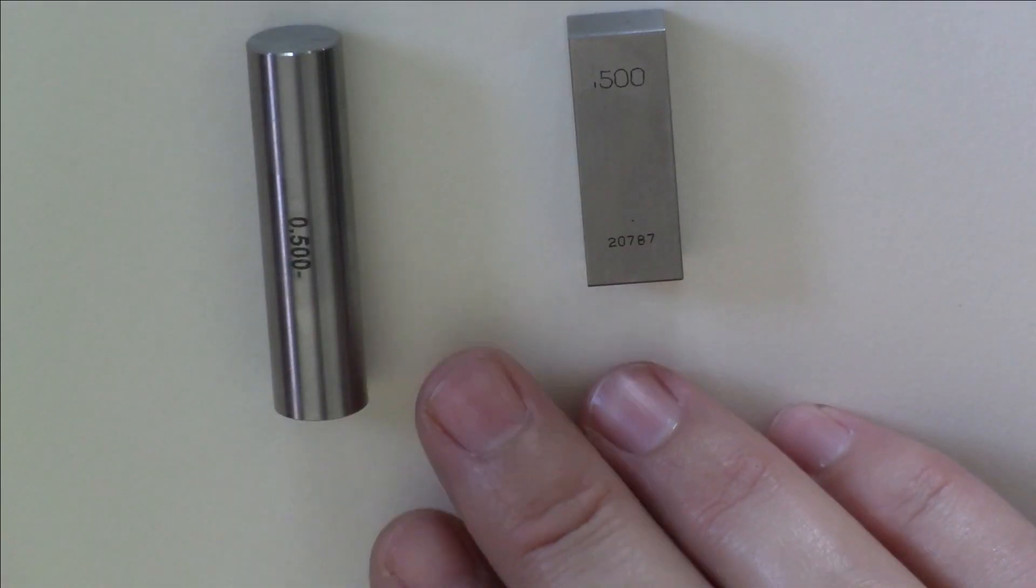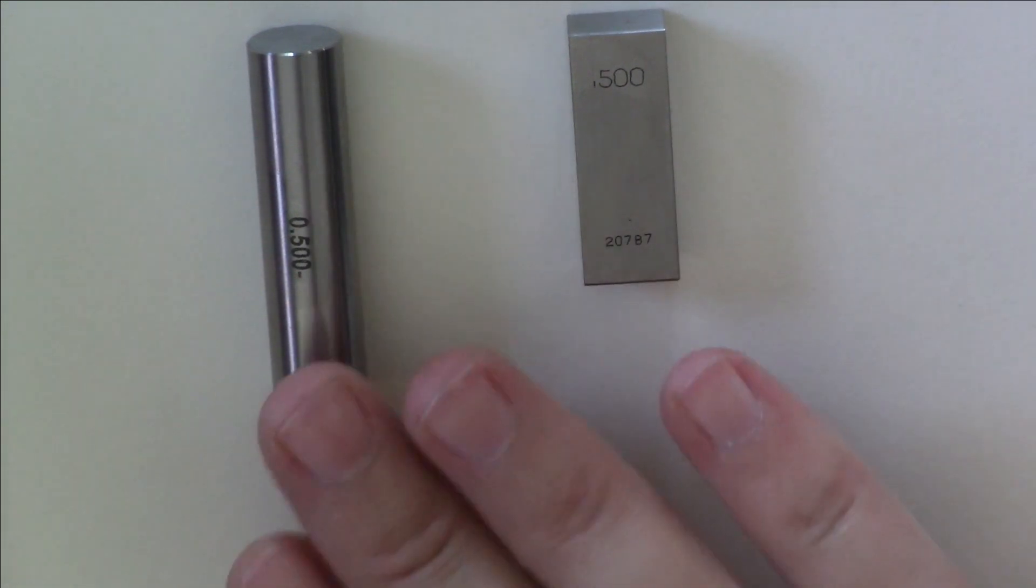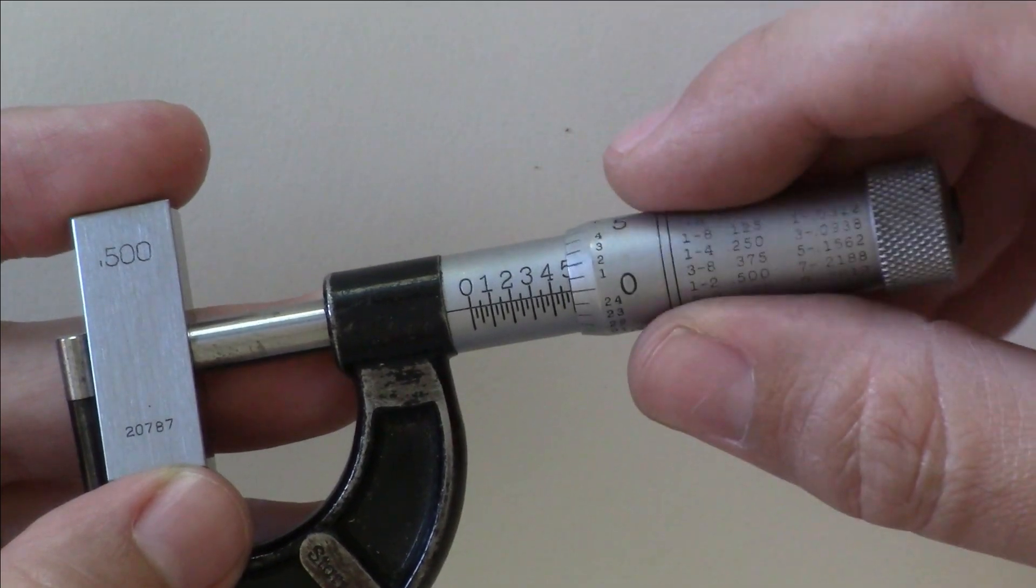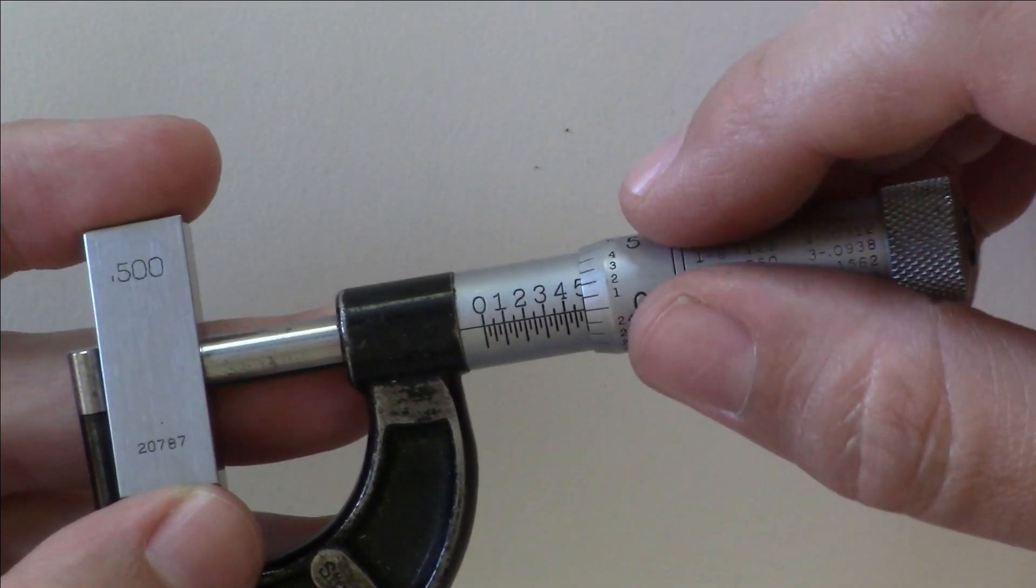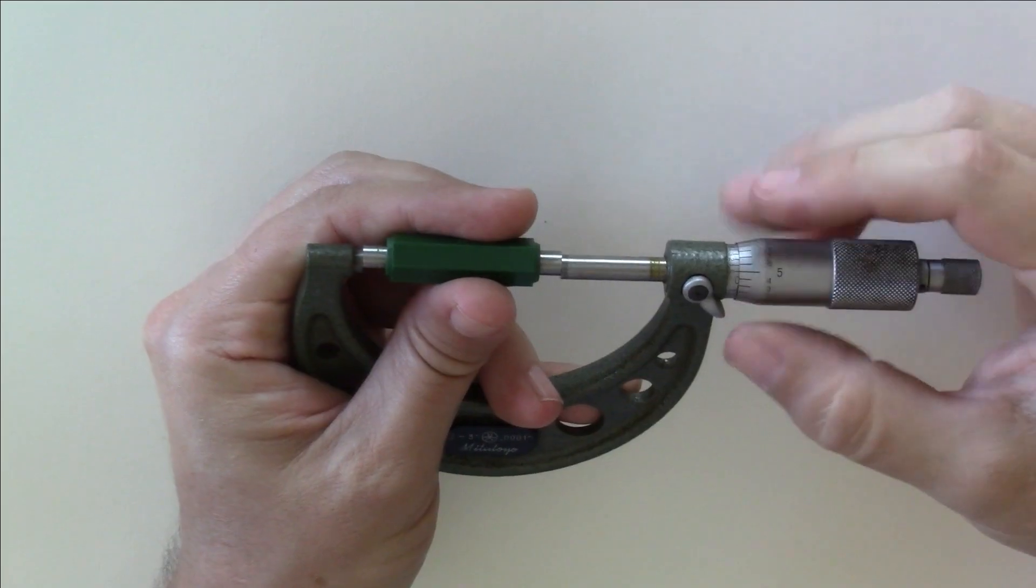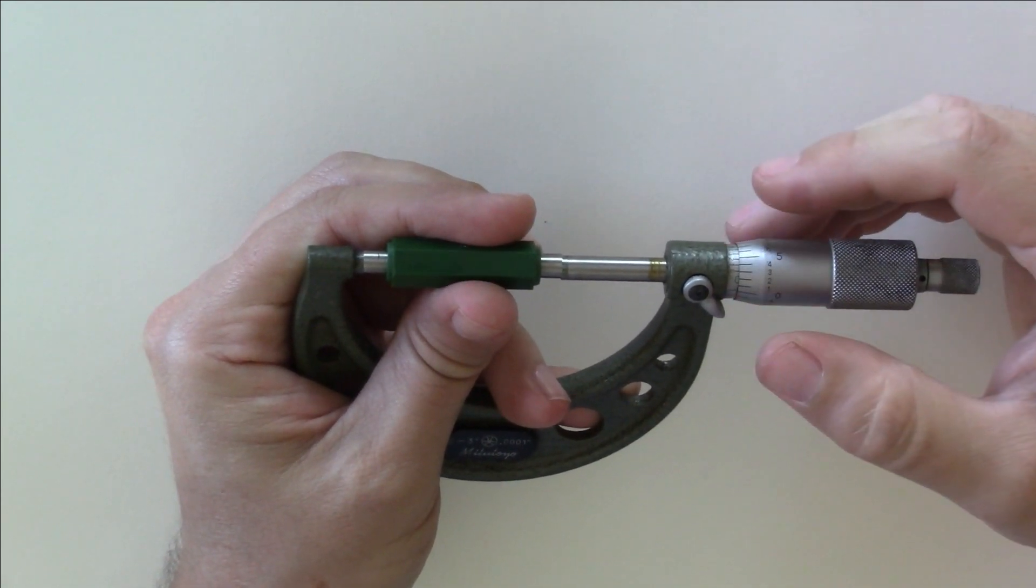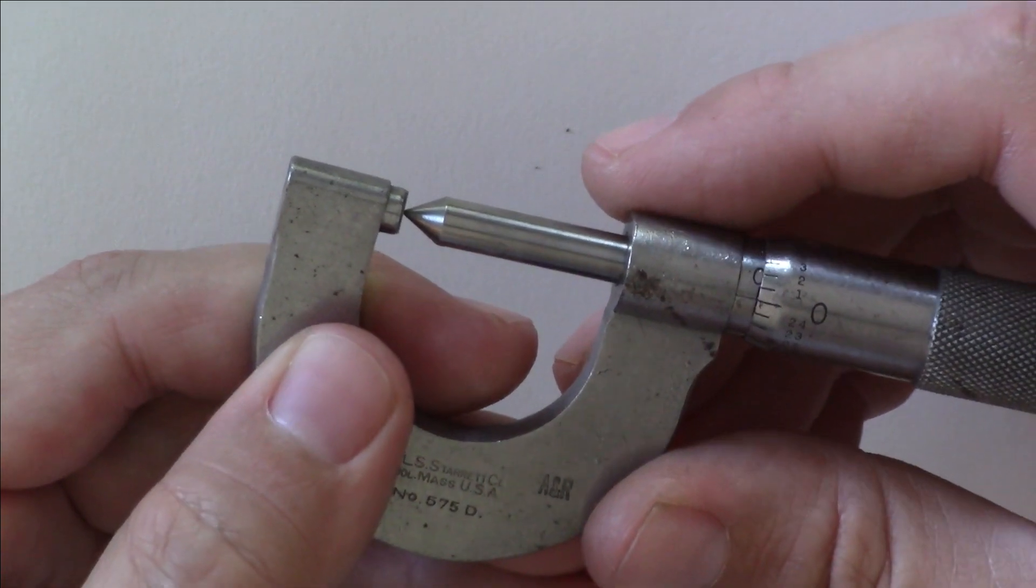The best way to practice this is by measuring something with a known dimension like gauge blocks or gauge pins. This way you are starting with the correct dimension. So if you are getting any other measurement, you know the problem is most likely your technique. You can also close the mic against itself or a micrometer standard for the larger micrometers to make sure that it is reading zero. Either way, practice until you are getting that measurement consistently.